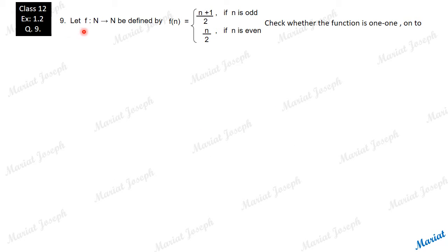Let the function f from N to N be defined as f(n) equals (n+1)/2 if n is odd, n/2 if n is even. Now check whether the function is one-to-one, whether it is onto.